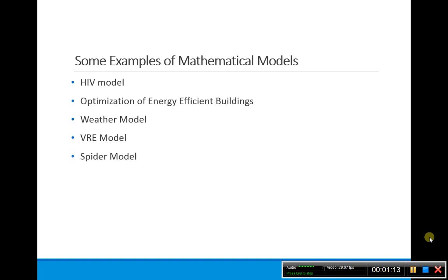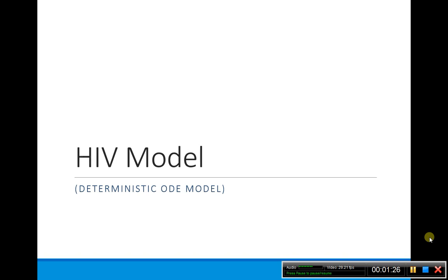The models we're going to talk about are the HIV model, how to use a model to design energy efficient buildings, a weather model, a VRE model, and a spider model. For each of these I'm just going to give an overview. Really what I want you to see is how you determine what is a deterministic model versus a stochastic model. One of the key things you'll get out of this lecture and assignment one is what does a stochastic model add that the deterministic doesn't add?